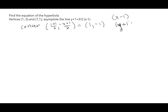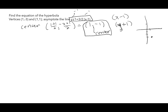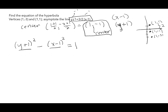The center is (1, -1). Since the vertices (1, -3) and (1, 1) are up and down, y comes first. The form is (y+1)²/a² - (x-1)²/b² = 1. The distance from center (1, -1) to vertex (1, 1) is 2, and to (1, -3) is also 2, so a = 2.